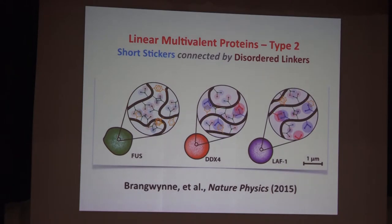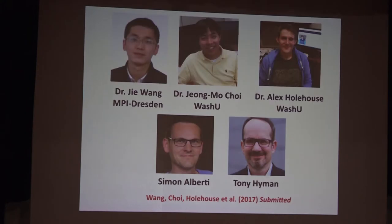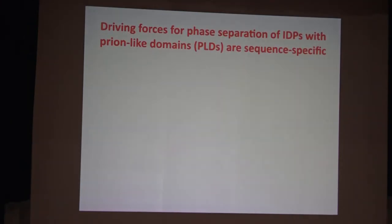Here are examples of FUS, DDX4, LAF1 — all of which come under the category of being fully disordered proteins where everybody routinely invokes multivalency. So the question is: what are the stickers in IDPs? Julie Forman-Kay has made several suggestions which we'll see are actually right. We've gone on a slightly different route. What I'm about to tell you is a collaboration between our lab and the labs of Simon Alberti and Tony Hyman at the Max Planck, and the key question we're trying to ask is: can we identify driving forces for phase separation in archetypal IDPs?